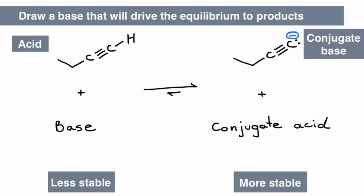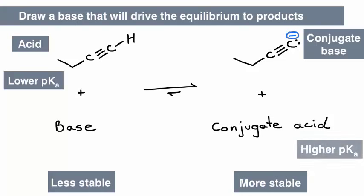Using method 1's analysis, the pKa value of the acid must be lower than the pKa value of the conjugate acid.